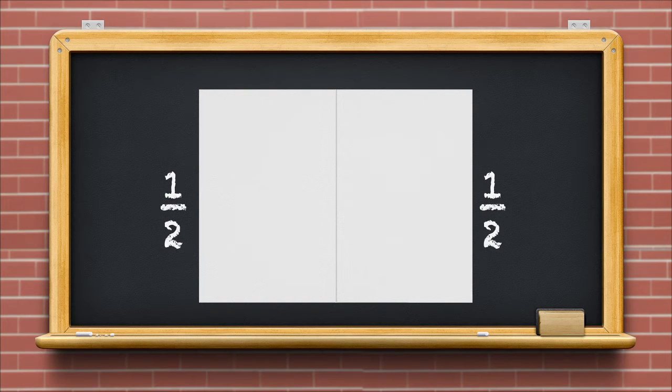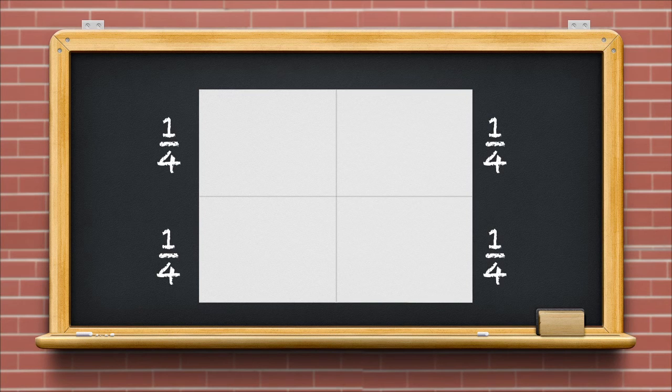Students can also try making equal parts by folding a sheet of paper. Ask them to fold the sheet once and then open it out to see two equal parts called halves. Can students create four parts using the same sheet of paper? All they have to do is fold the paper twice to see four equal parts.